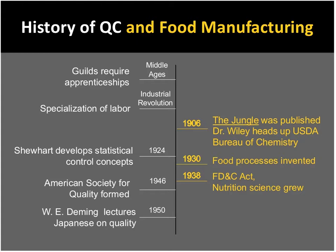As the country began focusing on compliance with that act, through the 1930s we had many food processes invented. Products like mayonnaise, canned tuna, corn oil, frozen foods, processed cheese, and candies were developed. You can think about how this fit with the expansion of manufacturing and mass production of food on the broader timeline of quality management.